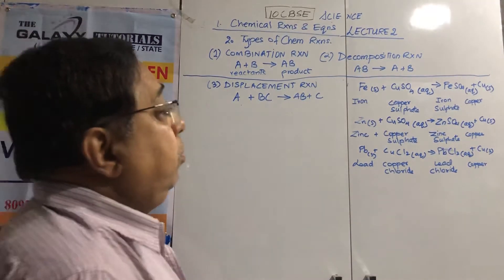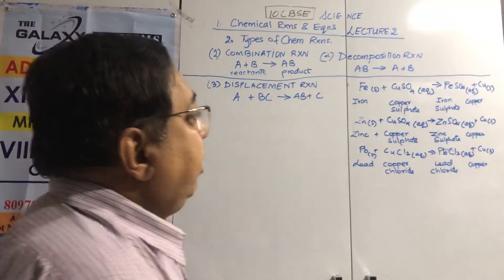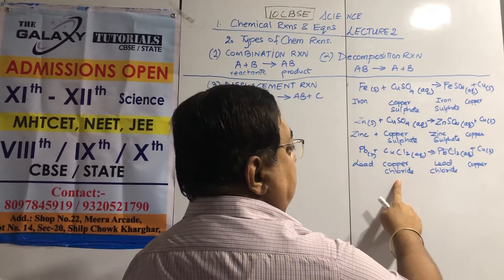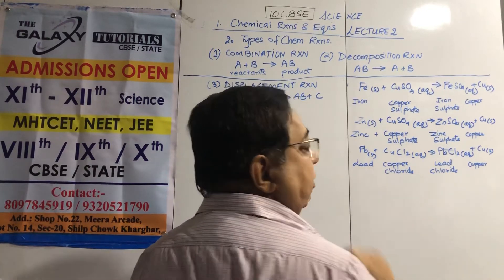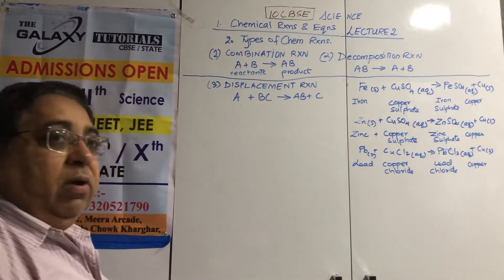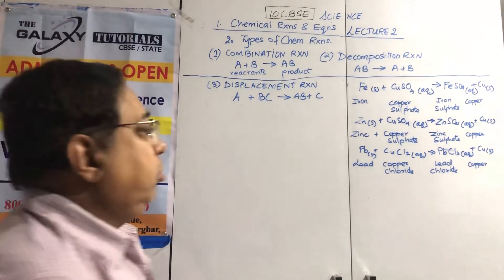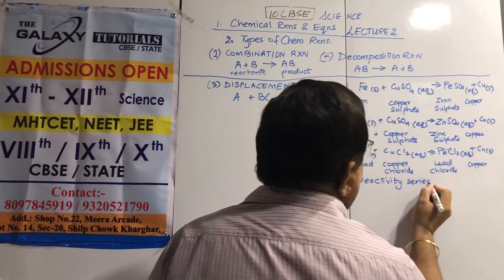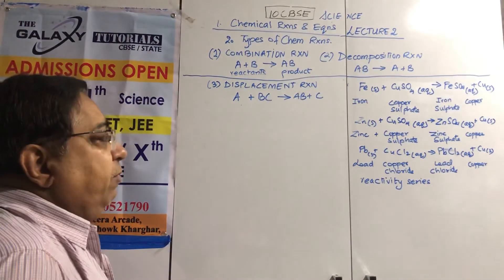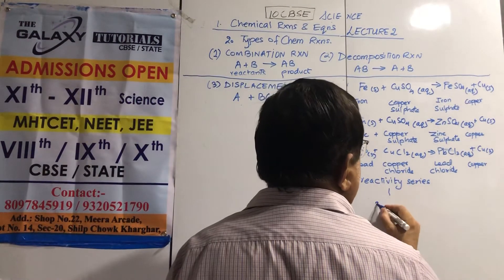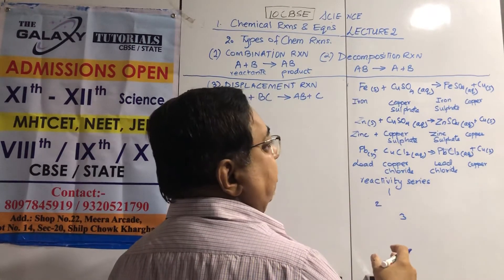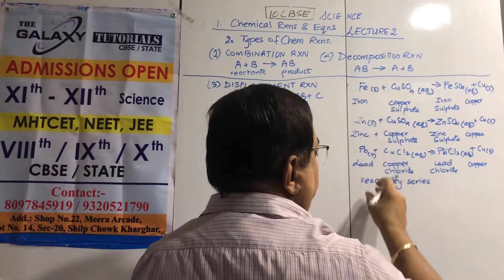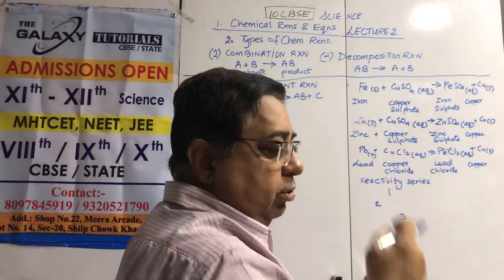Why did zinc displace copper from copper sulfate? It is like a more powerful student who snatches your pencil — reacting power in chemistry. This gives us the reactivity series: depending on your reactivity, we assign ranks. A more reactive metal can displace a less reactive one, but the reverse cannot happen. This ordered list is the reactivity series.